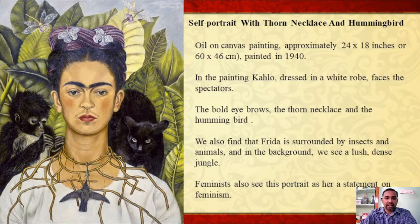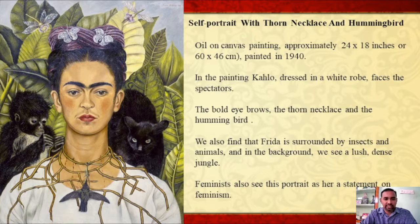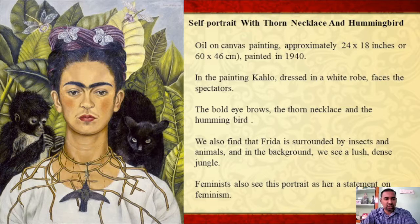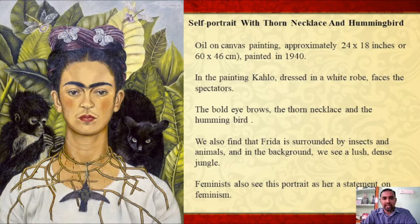Frida is surrounded by insects and animals, and in the background we see a lush dense jungle. A monkey sits behind her right shoulder, its eyes directed on its hands, and it is this monkey who carelessly tugs at the thorn necklace and causes her to bleed. It is believed that this monkey symbolizes Rivera, her husband, because it is the monkey that tugs the thorn necklace to make her bleed, and also because it is said that Rivera gave Kahlo a monkey as a gift. So art historians say the monkey on her right shoulder is probably a symbol of Diego Rivera.